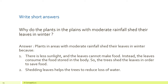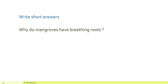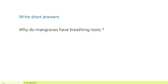Shedding leaves also helps the trees to reduce the loss of water. Why do mangroves have breathing roots? Mangroves grow in marshy areas where the soil is clayey and sticky. The soil is covered with water and the roots do not get air, so to get air the roots of mangroves adapt by growing out of the soil and water. These roots are called breathing roots.